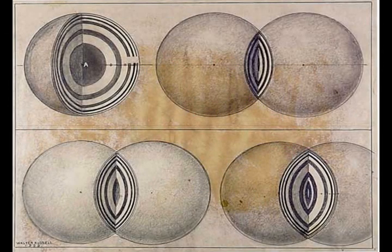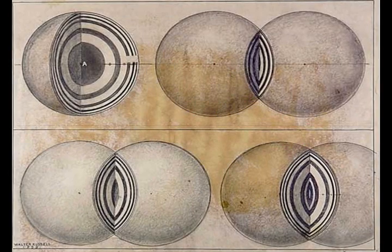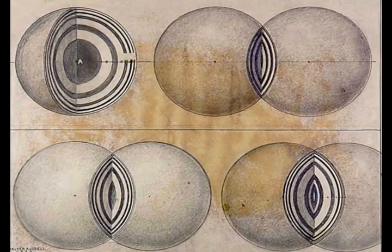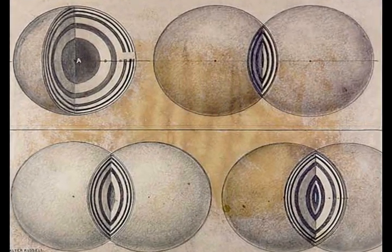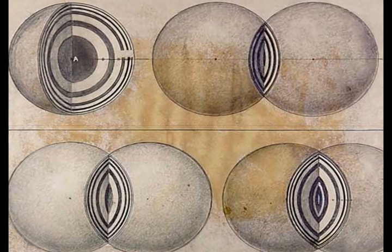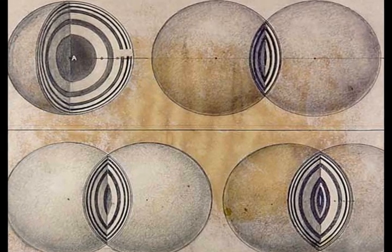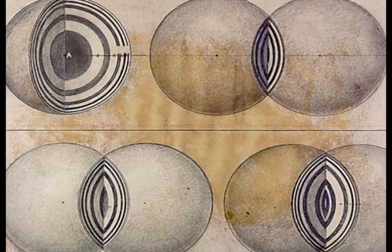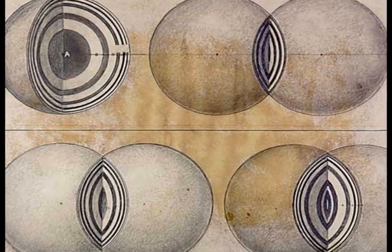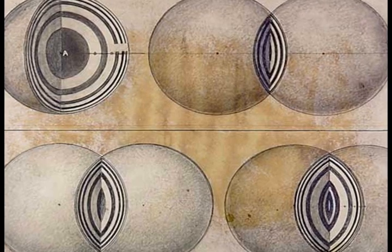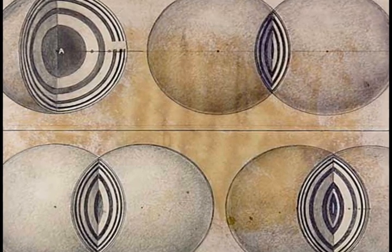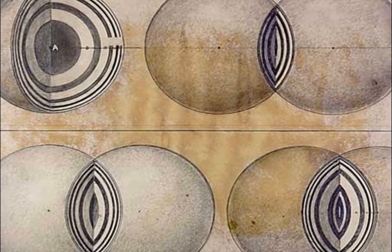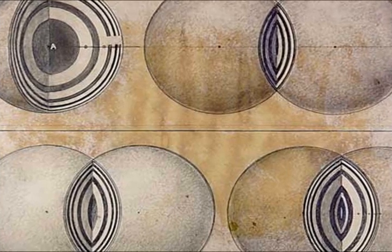Seen in three dimensions, the biconvex electric light lenses become very obvious in this image. Here we also see the varying layers of curved electric potential in the ring systems of the inert gases which give form to the spheres.